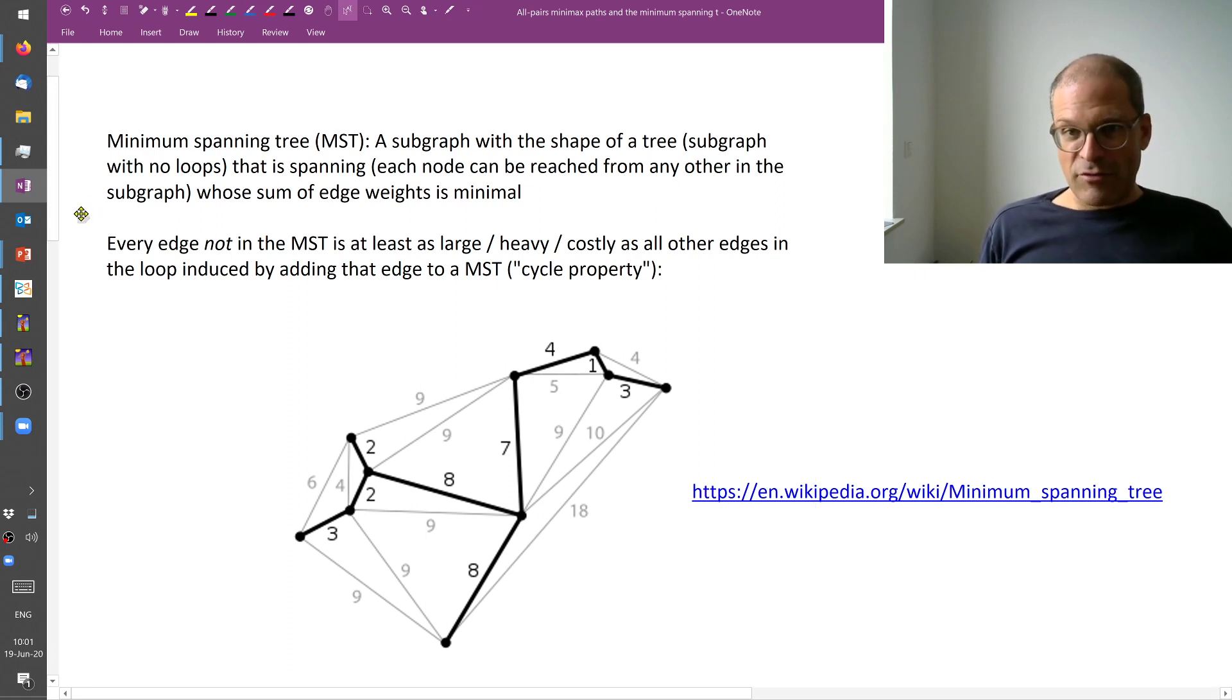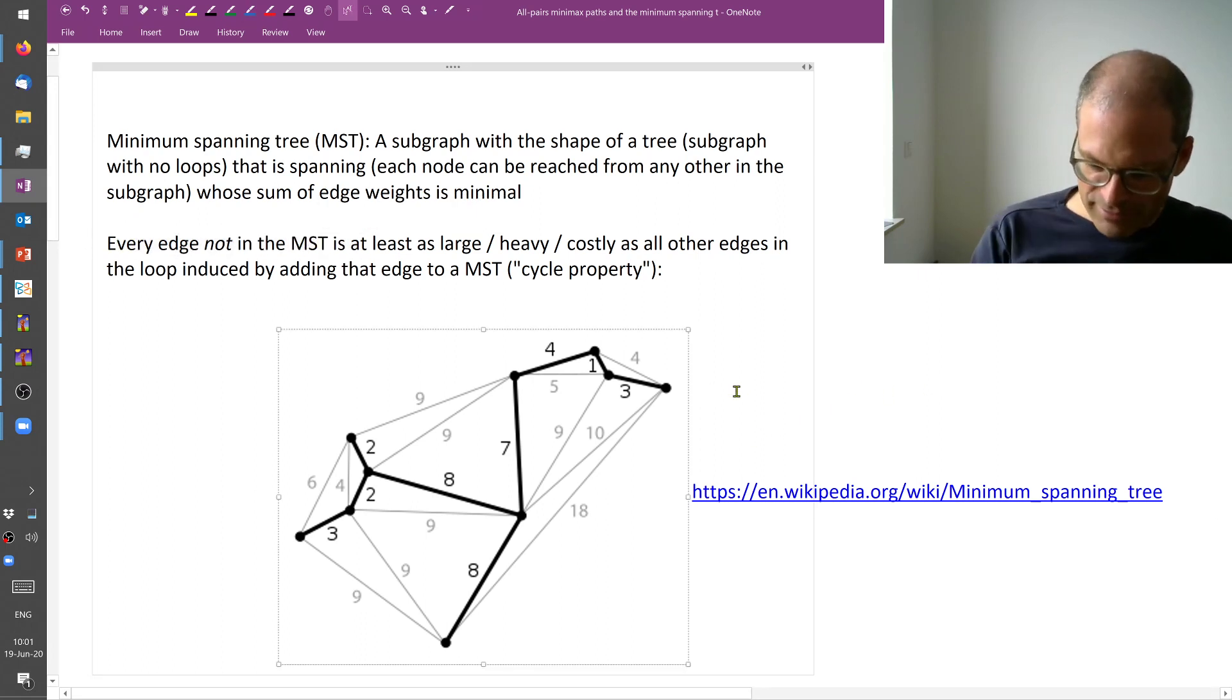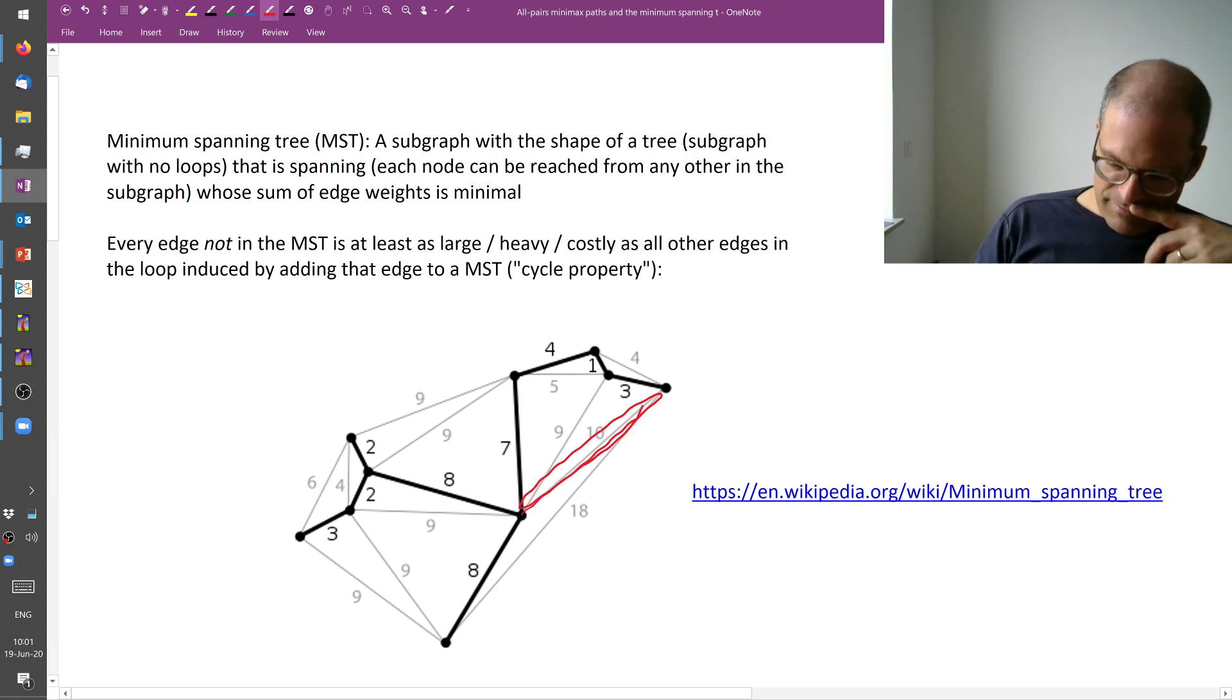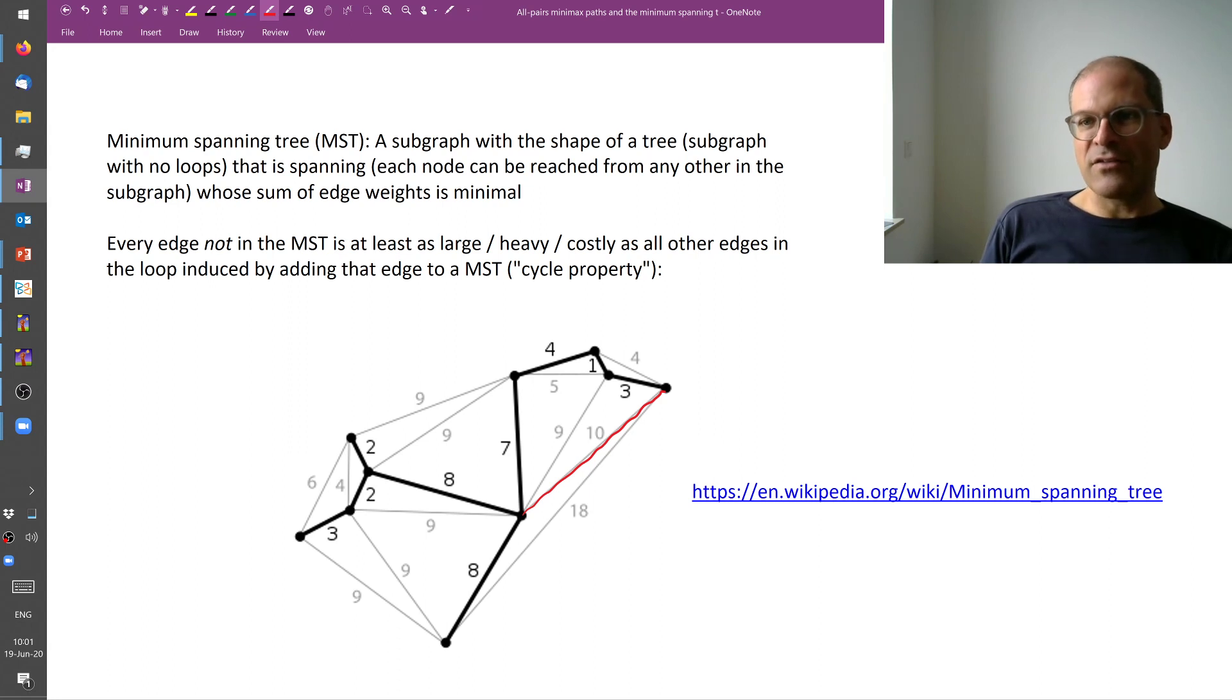And then we can find this minimum spanning tree. And it has several interesting properties. One is this. Name every edge not in the minimum spanning tree. So for example, let's say this edge here, it's not part of the minimum spanning tree. And every edge that's not in the minimum spanning tree should be at least as large as all other edges in the loop induced by adding this edge.